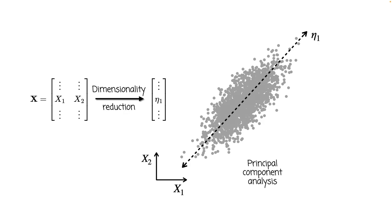This is simply because PCA finds subspaces as directions of the largest variance in the data. We could then project all of those points onto this one-dimensional line. But what if we also have a specific quantity of interest that we would like to be well represented over the low-dimensional projection?